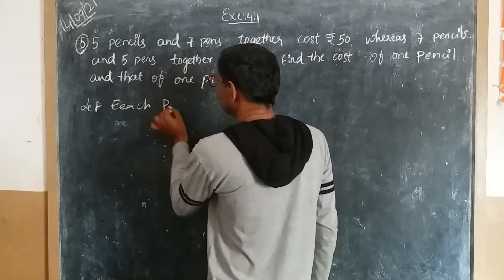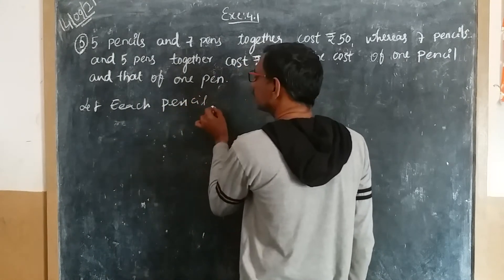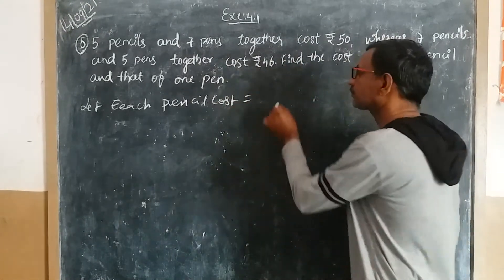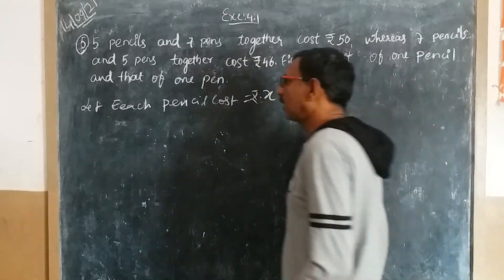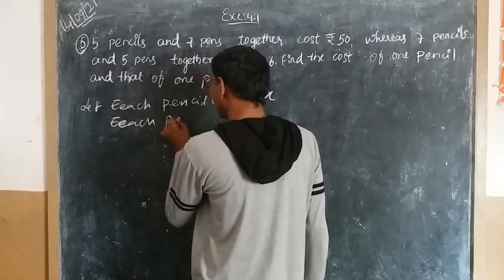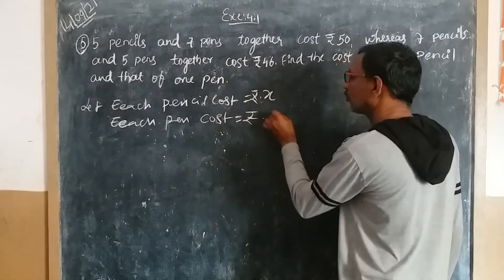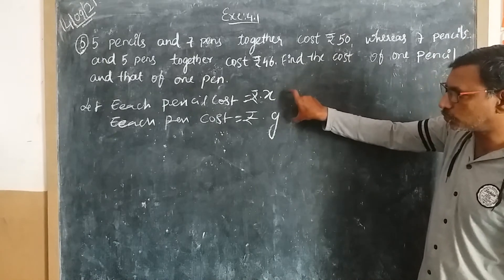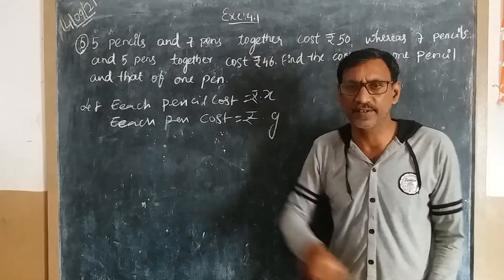Let me start. Let each pencil cost x rupees, and each pen cost y rupees. Using these two variables, x and y, I will write two pairs of linear equations from this problem.